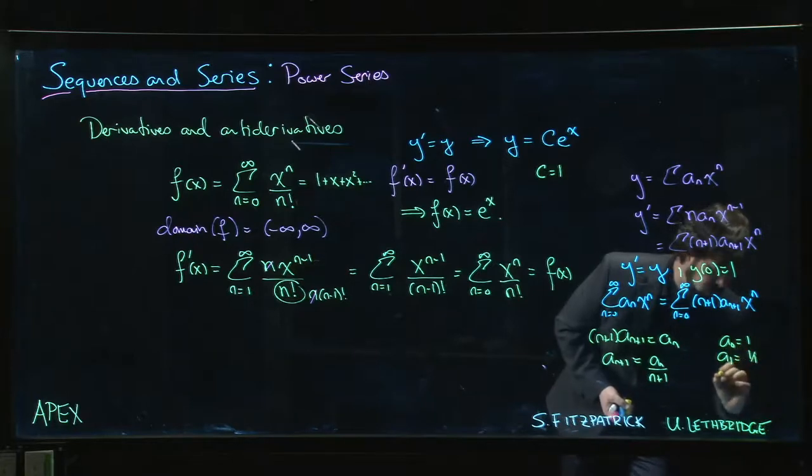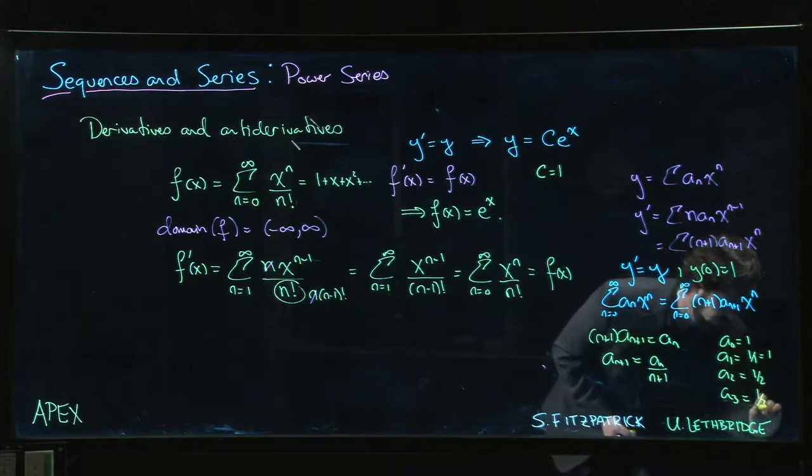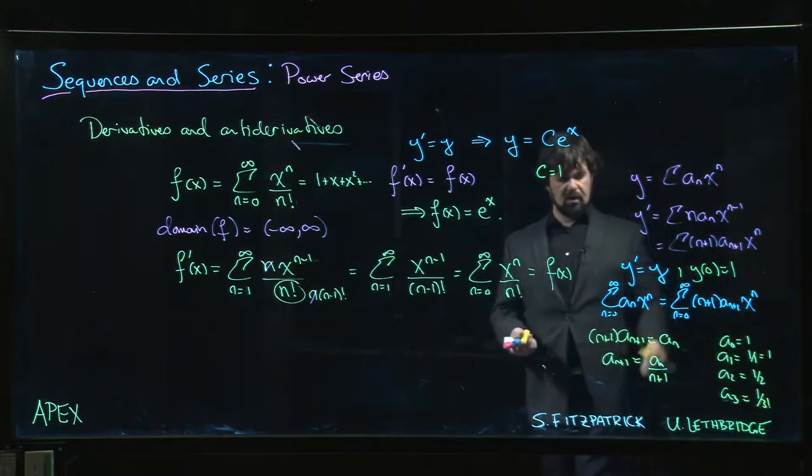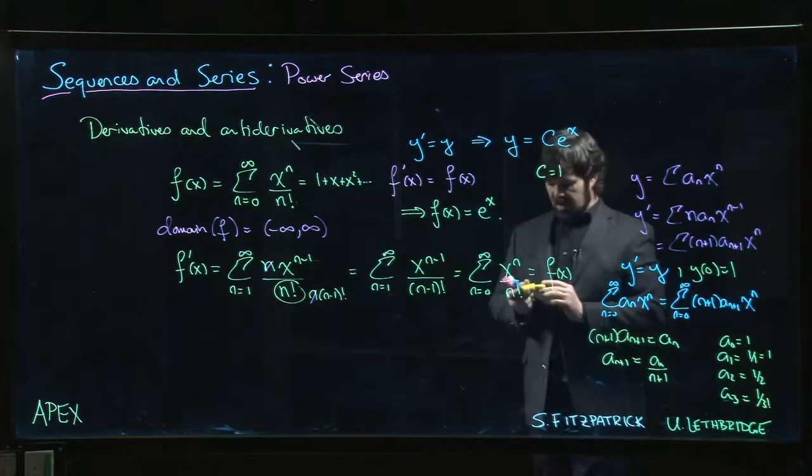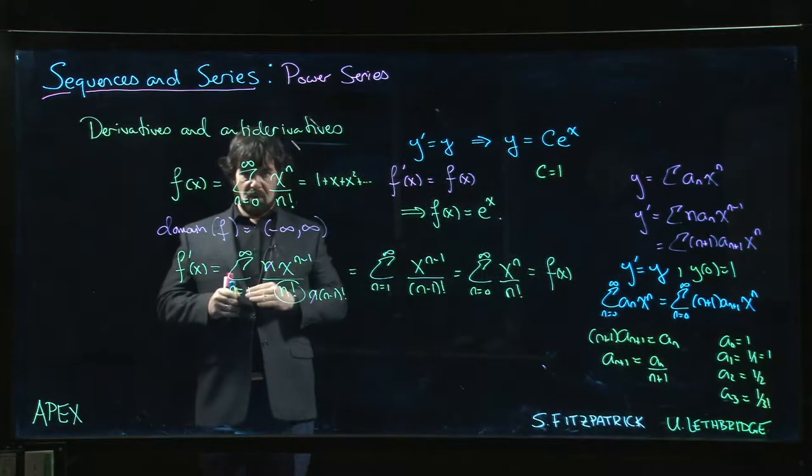Well, then you get a_0 = 1, a_1 is 1/1, a_2 is 1/2, a_3 is 1/2 divided by 3, it's 1/6, it's 1/3 factorial, and so on. You can show that in general a_n is going to be 1/n factorial. You recover the power series.